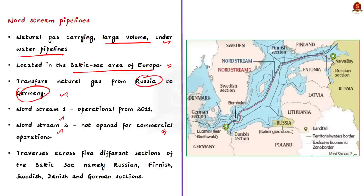Have a look at this image — it clearly shows the two different streams of pipeline. The pipeline traverses across five different sections of the Baltic Sea, namely Russian, Finnish, Swedish, Danish and German sections. As per this article, the leakages were reported in both the Finnish and Swedish sections.